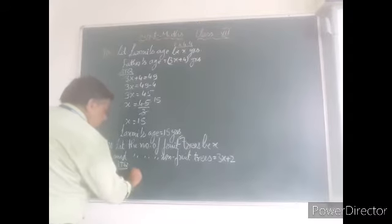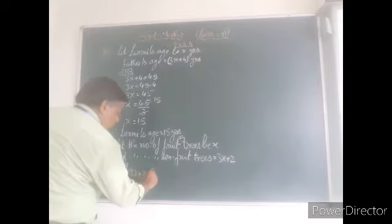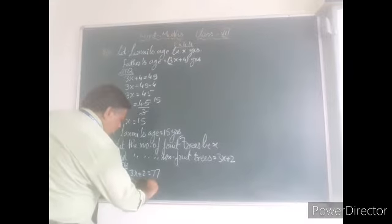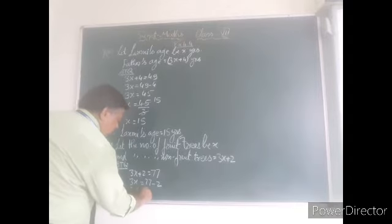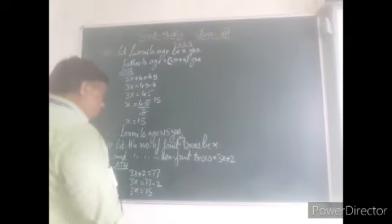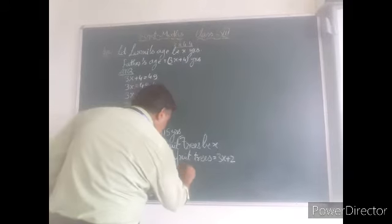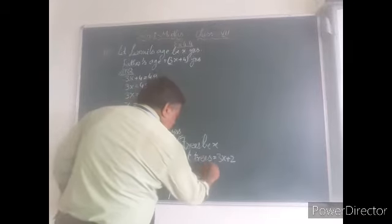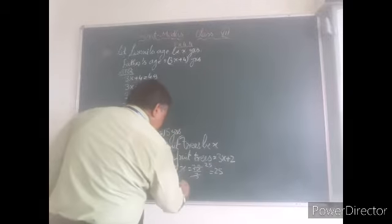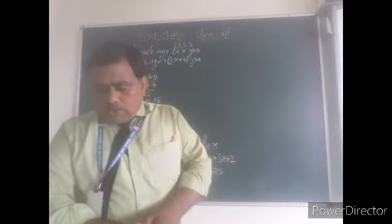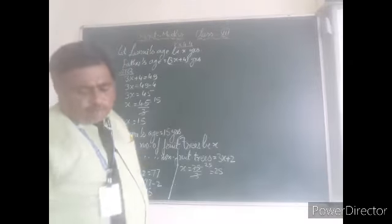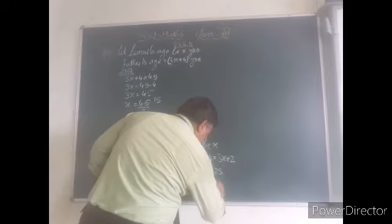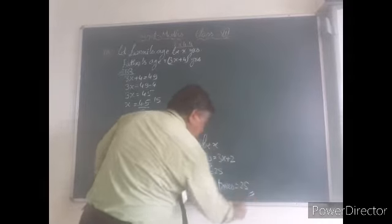According to the question, 3X is equal to 77 minus 2. 3X is equal to 75. So X is equal to 75 upon 3, that is equal to 25. Therefore, the number of fruit trees is equal to 25.